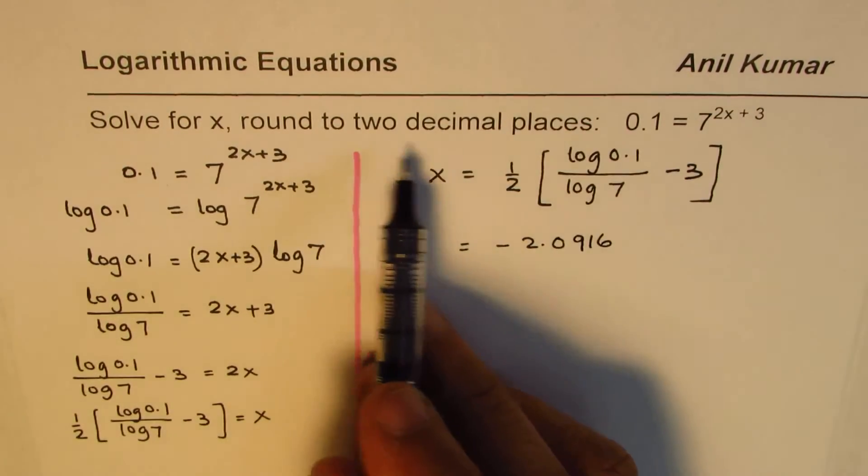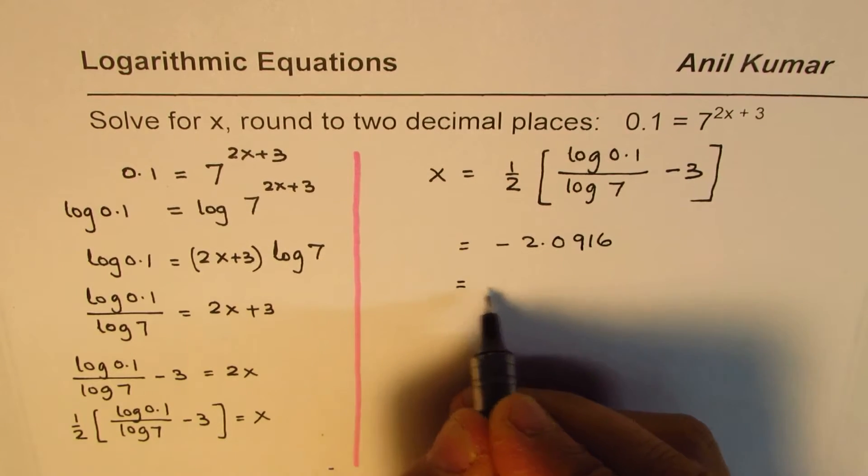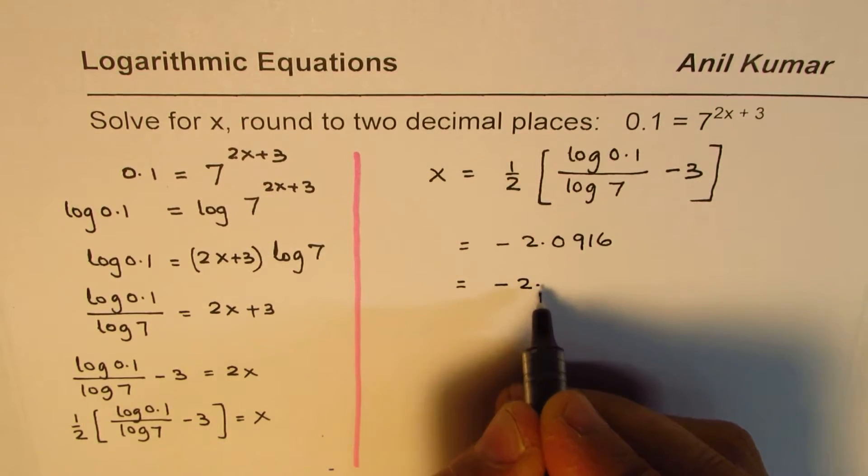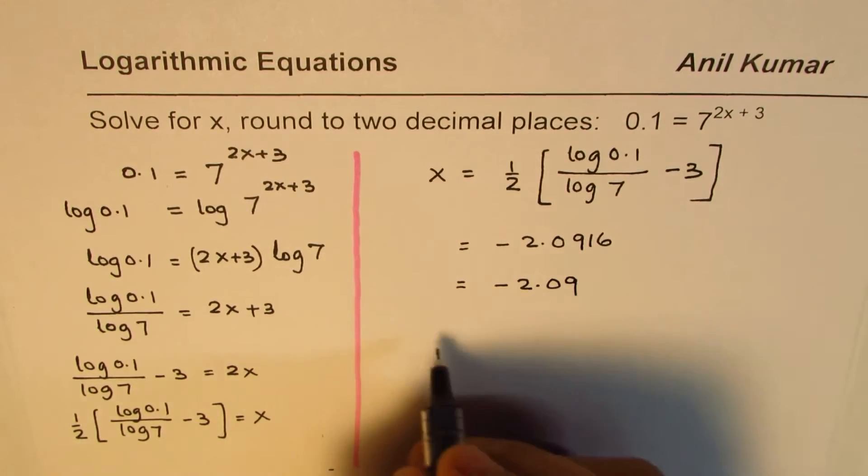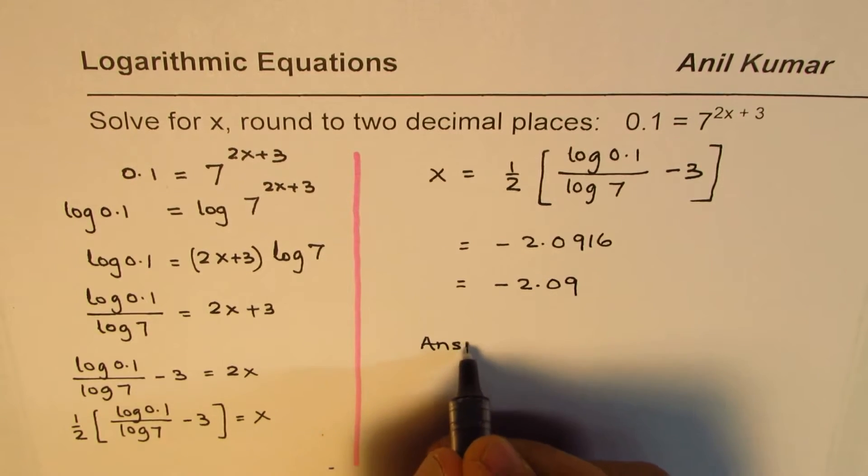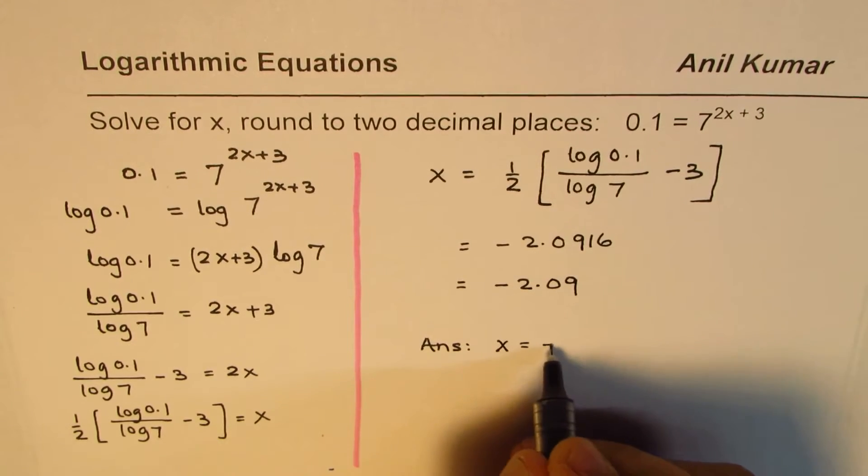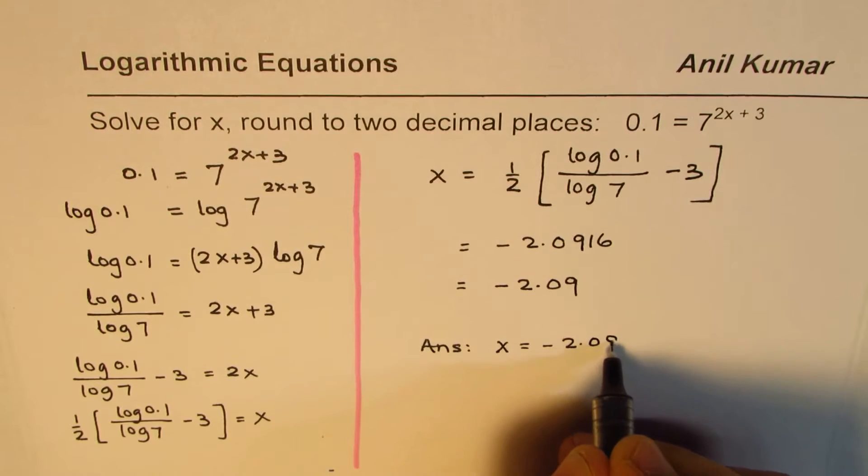Rounding it to two decimal places gives us x = -2.09. So our answer is x = -2.09.